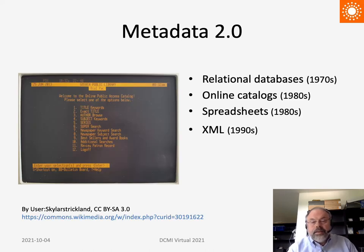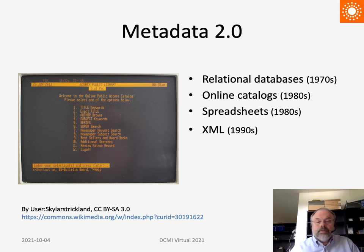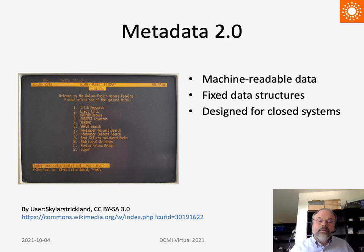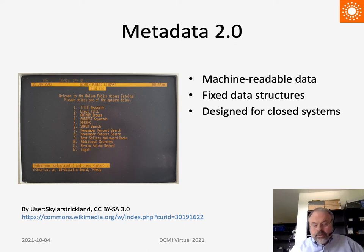Starting in the 1970s, metadata went digital, with new technologies such as relational databases, online catalogs, and XML. Let's call this metadata 2.0. Data is machine-readable, defined with fixed structures such as database schemas and record formats, and designed for closed IT systems.